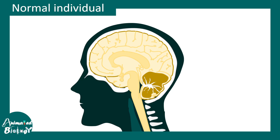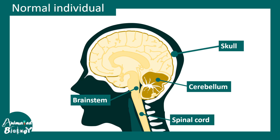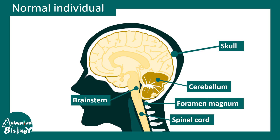This is how a normal individual's brain looks like. Here is a skull, cerebellum, brain stem, spinal cord, and here is the foramen of magnum.